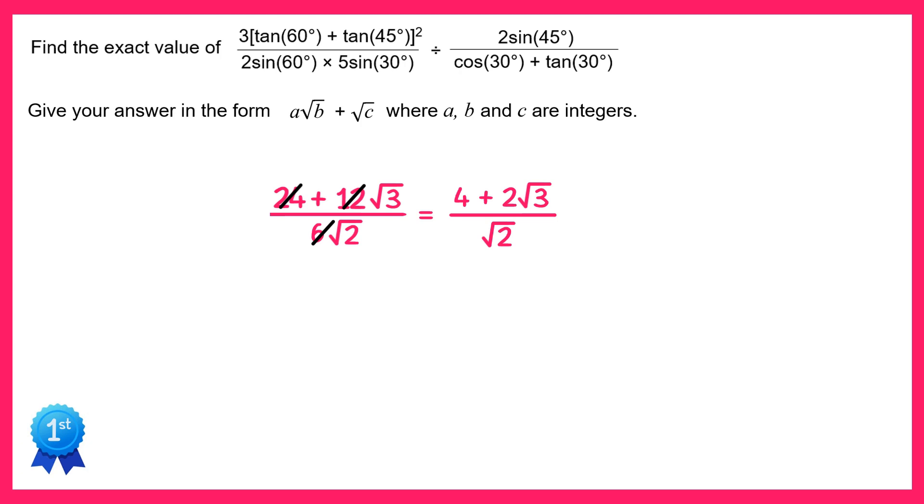We can now rationalise the denominator by timesing the top and bottom by root 2. If you times the top by root 2 you get 4 times root 2 which is 4 root 2, and then root 2 times 2 root 3 which is 2 root 6. On the bottom, root 2 times by root 2 is just 2, and now there's a common factor of 2 to cancel out so we just end up with 2 root 2 plus root 6. This matches the form we were asked for in the question so we're finished, it's 2 root 2 plus root 6.